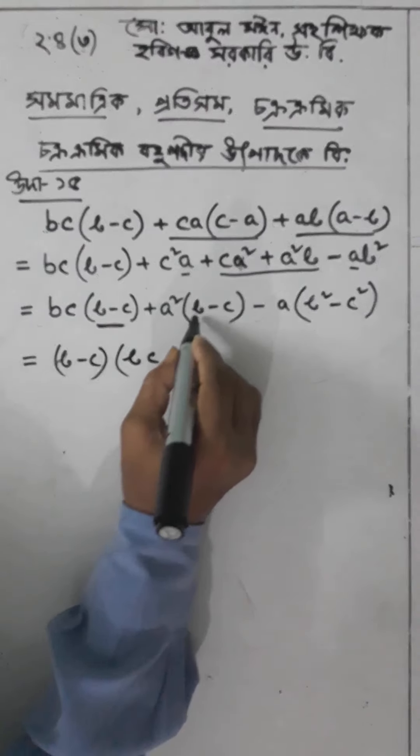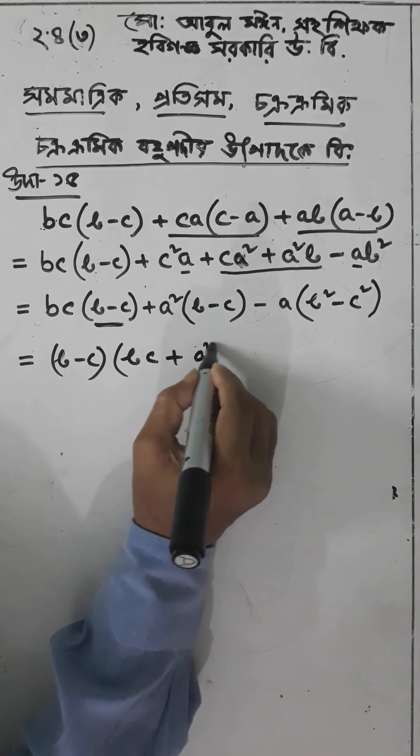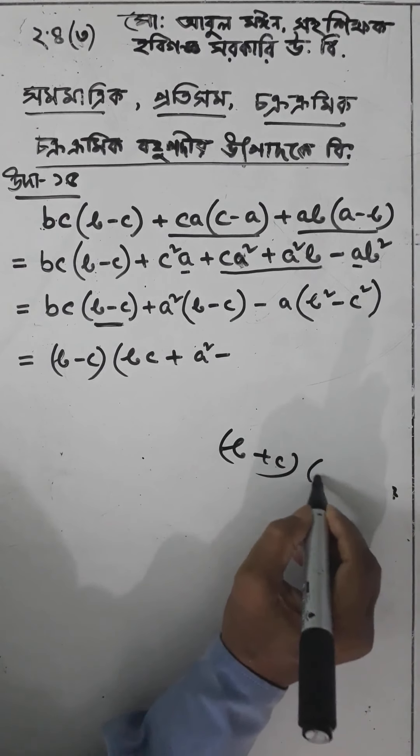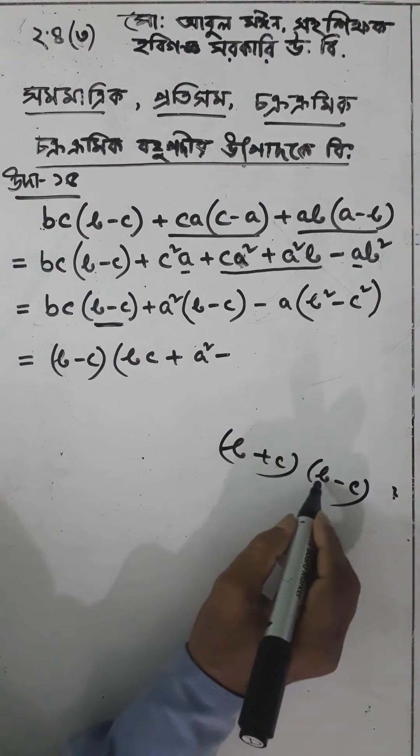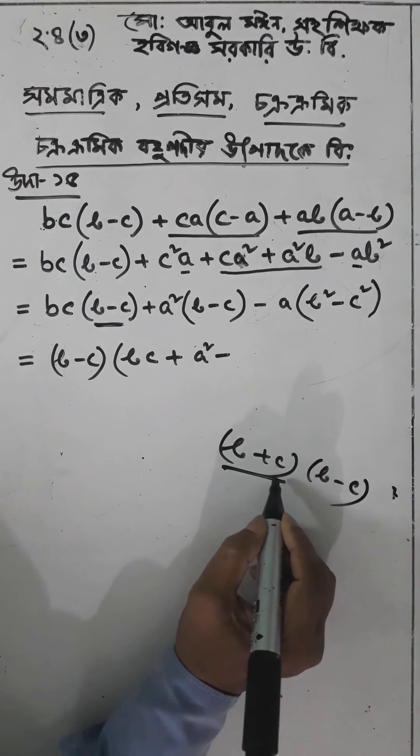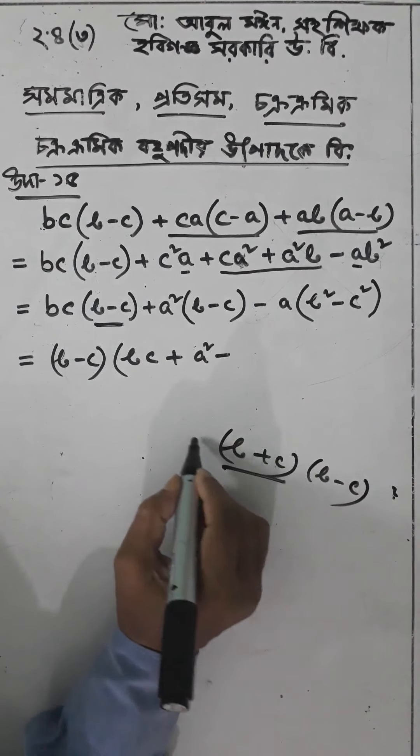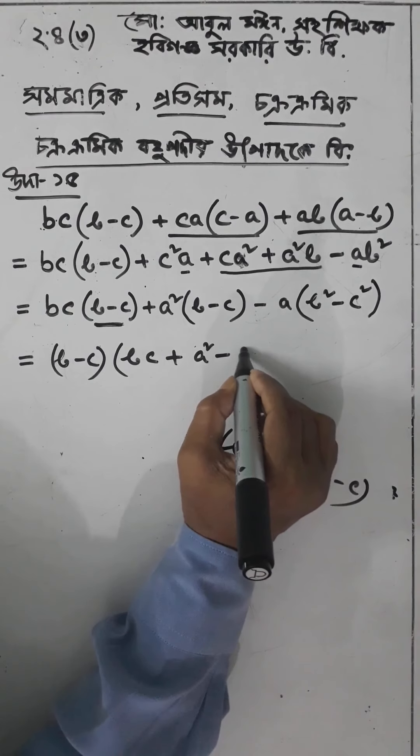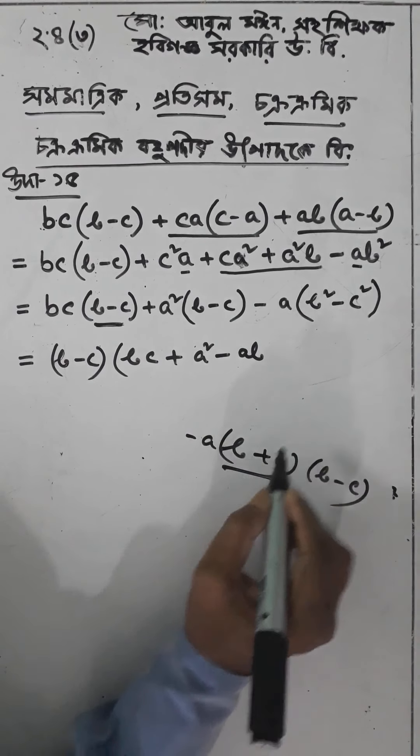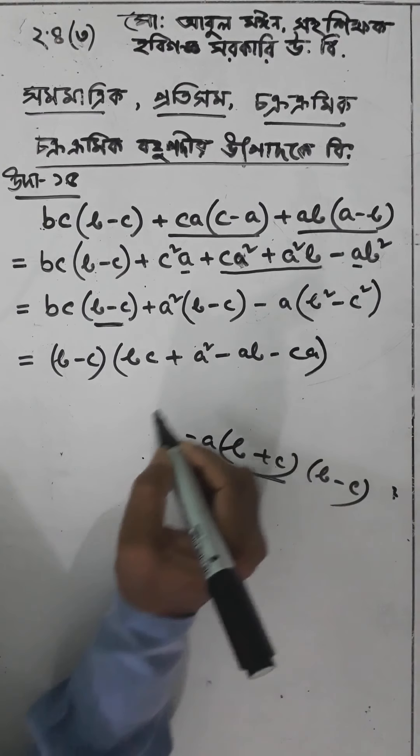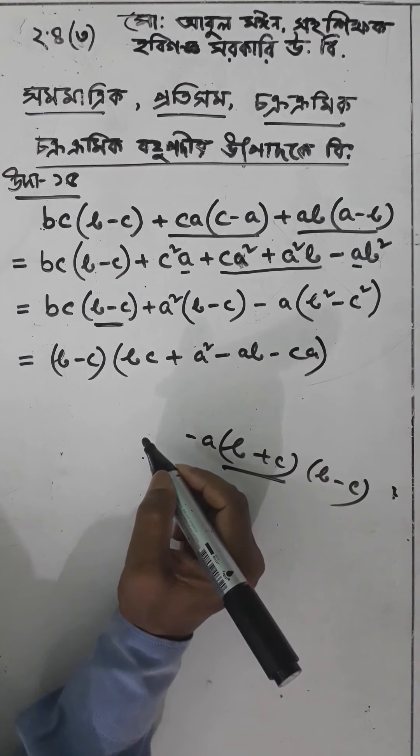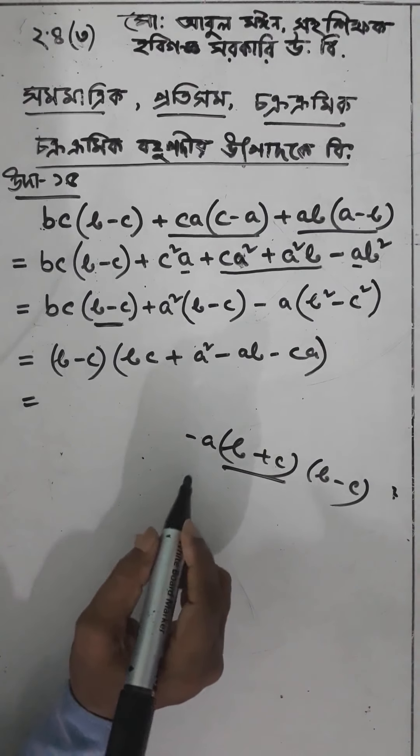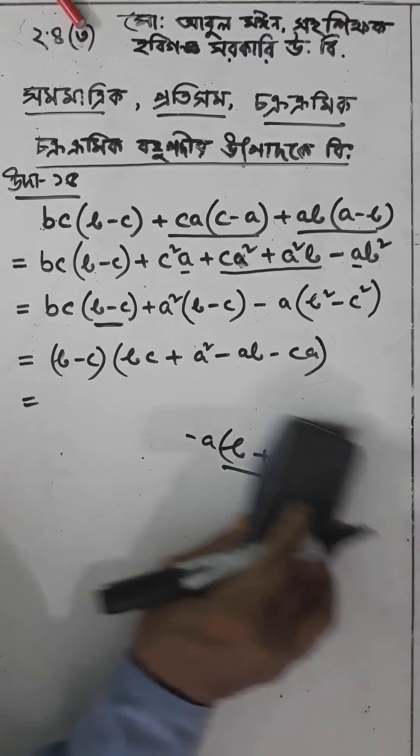So we have b plus c into b minus c, which gives b minus c common. Then b plus c minus a into b plus c. We can take a common.